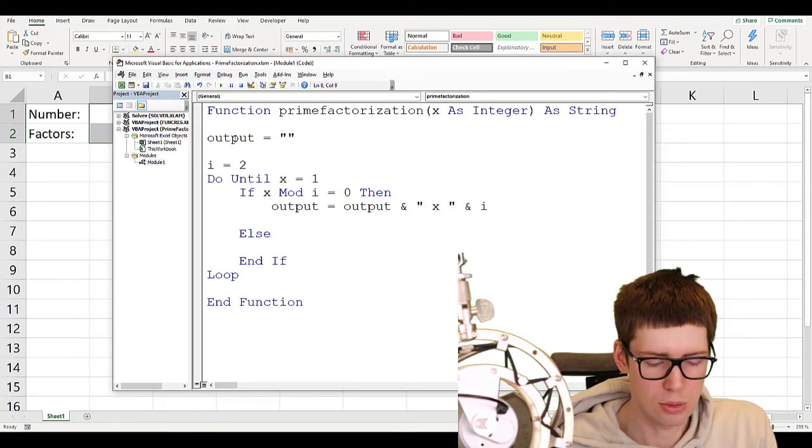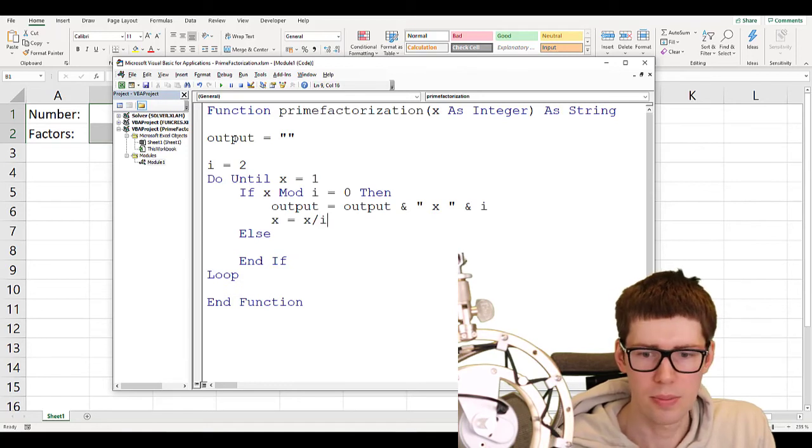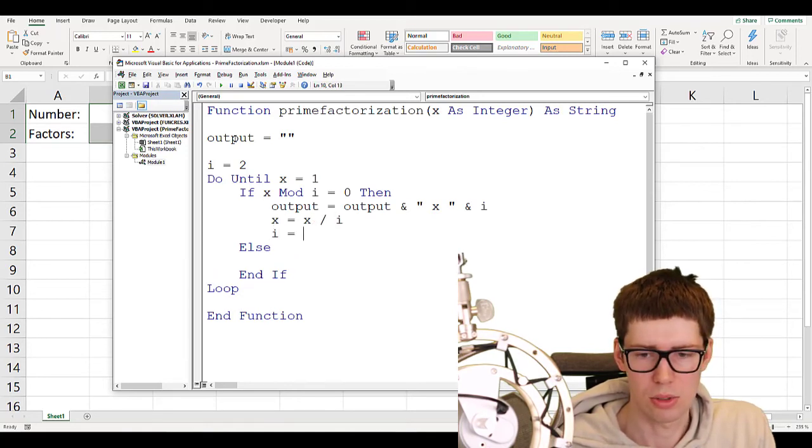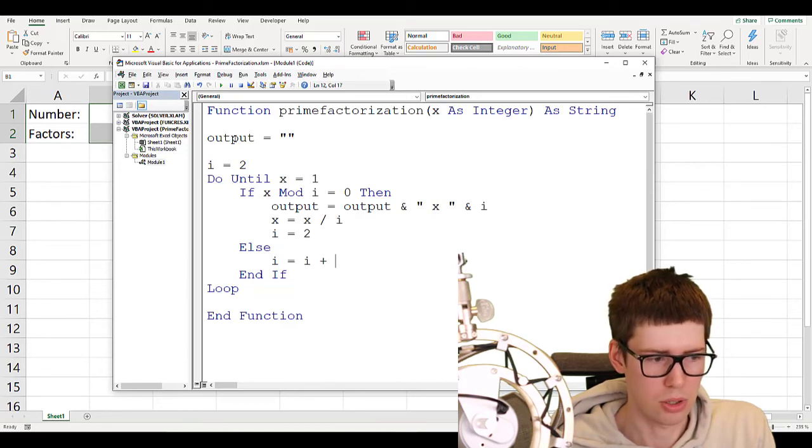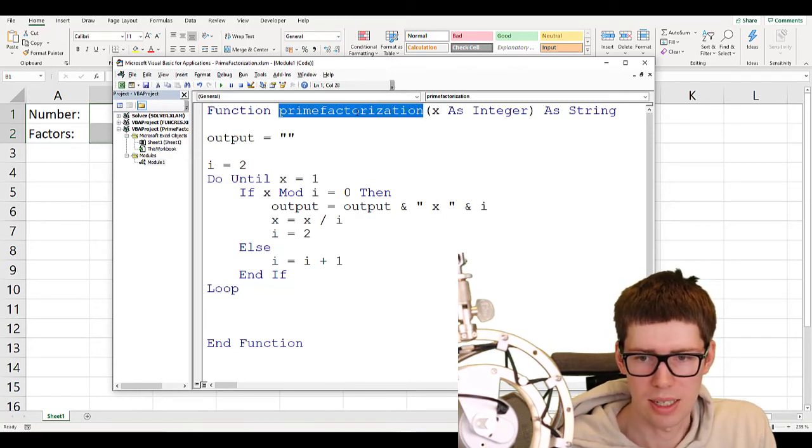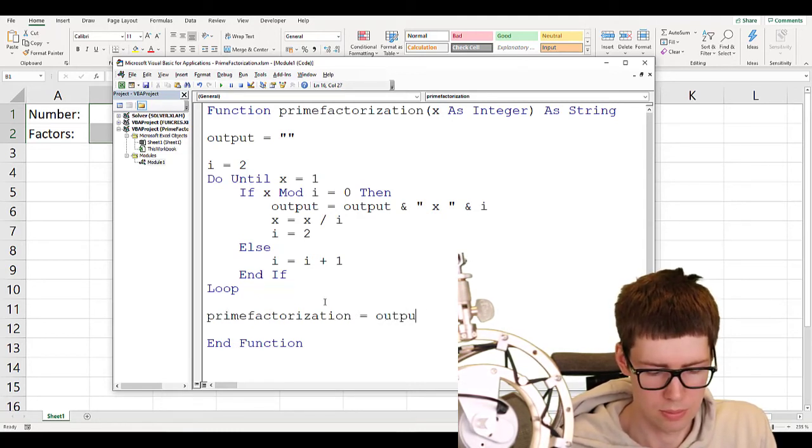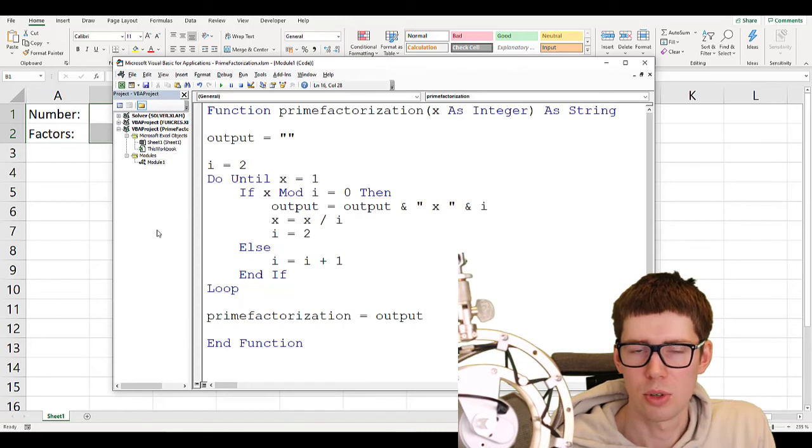And next, I need to update the value of x. So x is going to be assigned with the value of its previous value divided by i. And then I need to set i equal to 2. Else, I increment i. So i is equal to i plus 1. And in the end here, we say that the variable prime factorization is equal to output.